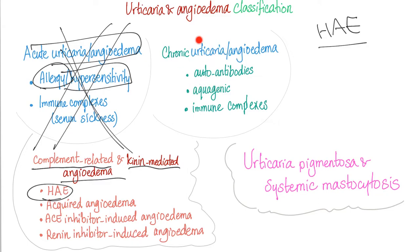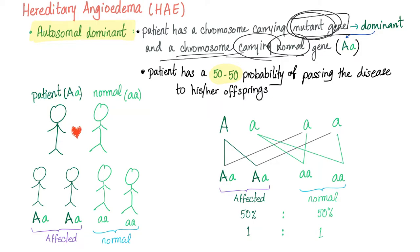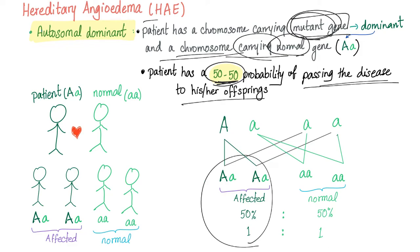Aquagenic urticaria — remember aquagenic pruritus? That was polycythemia vera, one of the myeloproliferative neoplasms. Hereditary angioedema is an autosomal dominant disease. You have two copies of genes; one is mutant and the other is normal. You have a 50-50 probability of passing the disease to your children — 50% will be affected, the other 50% will be normal.